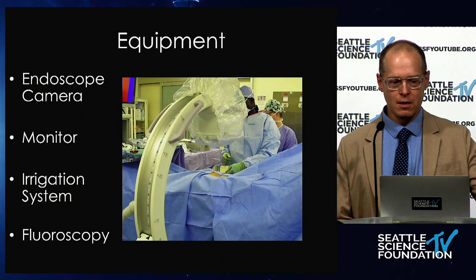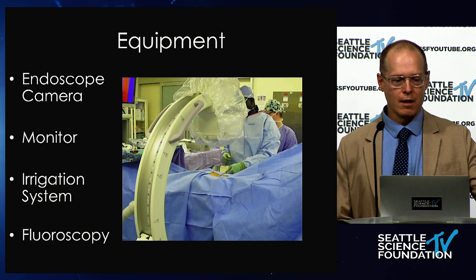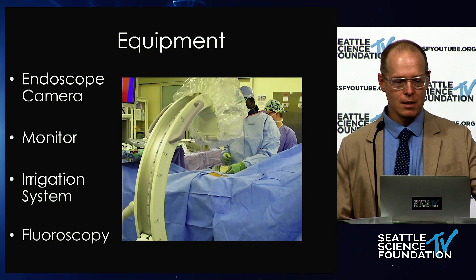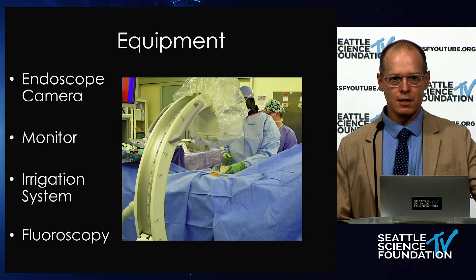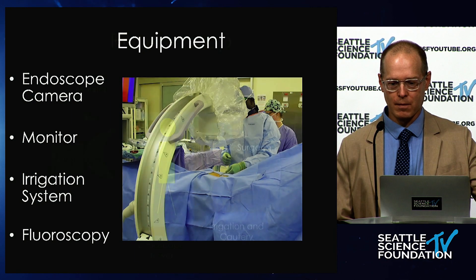Equipment: endoscopic camera, monitor, irrigation system, fluoroscopy — these are the big things. The camera system I use is actually the same as our arthroscopic and laparoscopic surgeons, which brings down the costs. The irrigation system is the same as the arthroscopic surgeons, which again brings down the capital acquisition costs in your hospital.